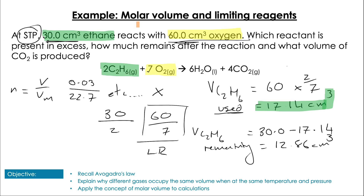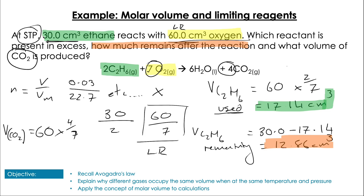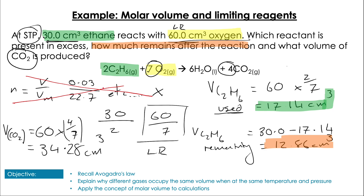That tells us how much of the excess remains after the reaction. For the volume of CO₂ produced, we use the limiting reactant — oxygen at 60 cm³ — multiplied by the mole ratio of CO₂ to O₂, giving 34.28 cm³. We never need to convert to moles because we know moles and volume are directly related. Of course, if you did convert everything to moles and back, you'd still get the correct answer — it's just less efficient than keeping it in volume.